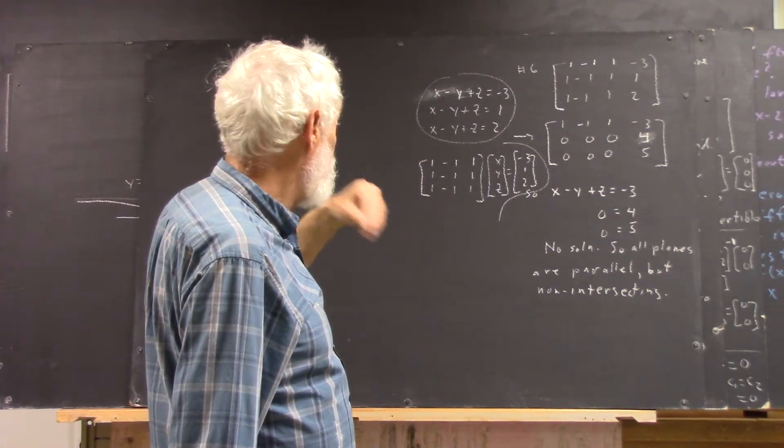In any of those ways, you determine that there's no solution to the system, and then that tells you that the planes are non-intersecting. Thank you.